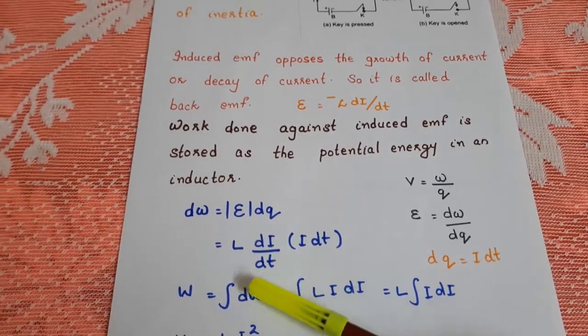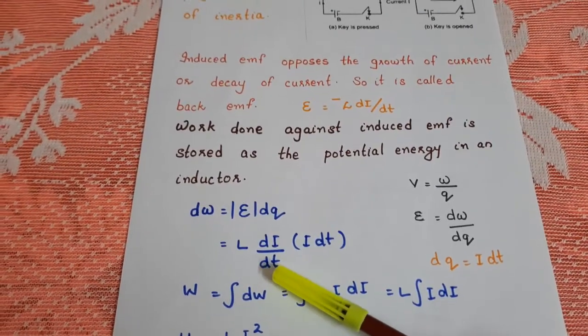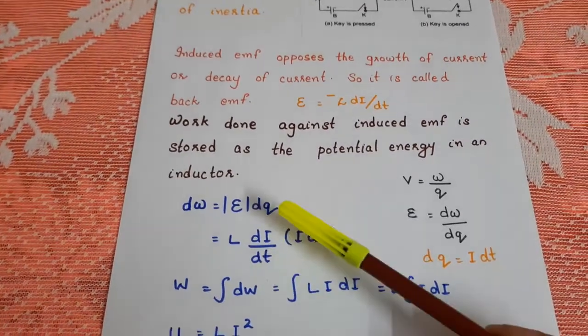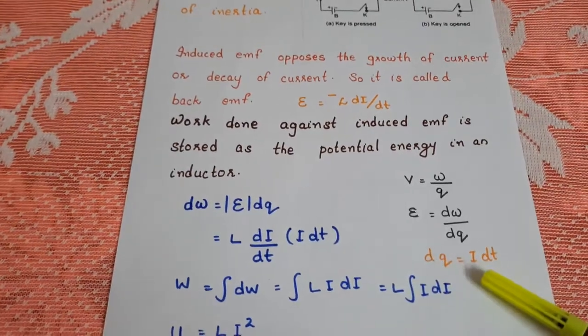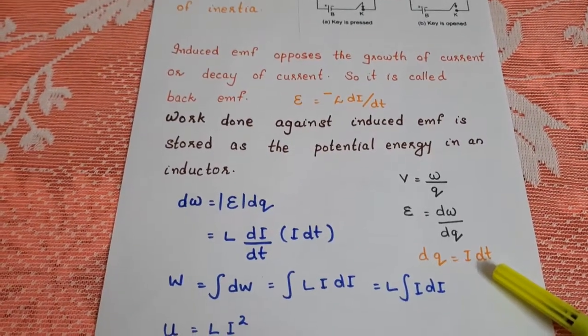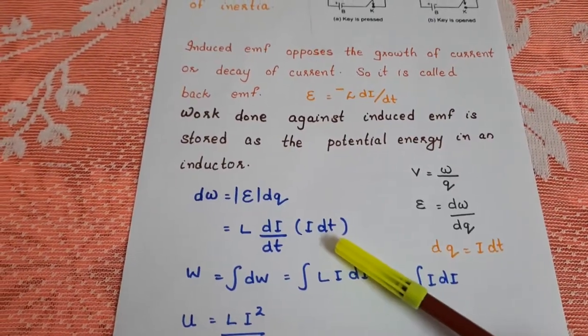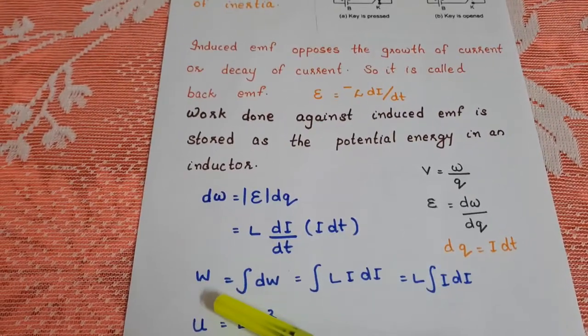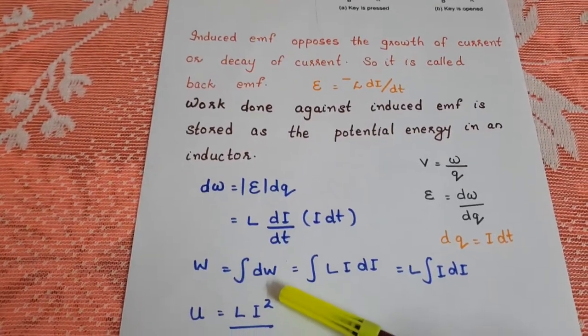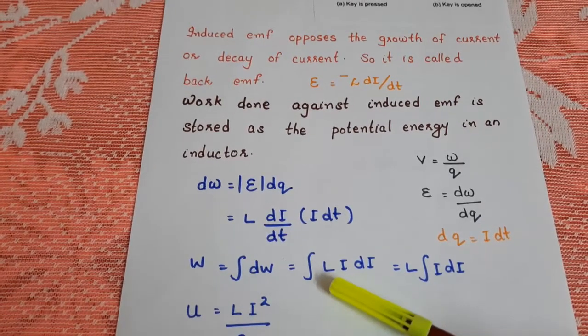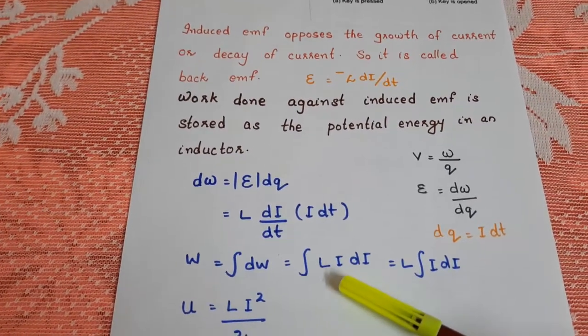The magnitude of the induced EMF is L into dI by dt, and the charge dQ is equal to I dt. So the total work done W is equal to integral DW, that is equal to integral L I dI.